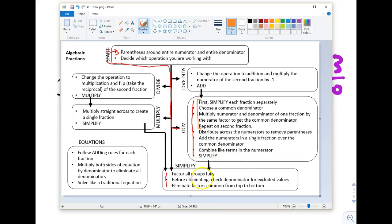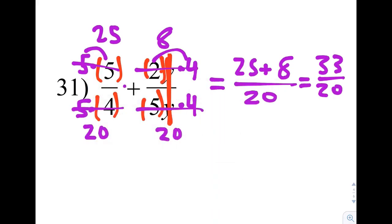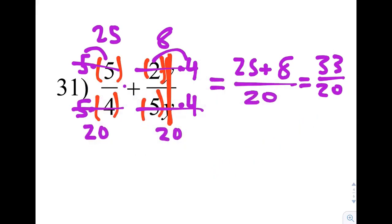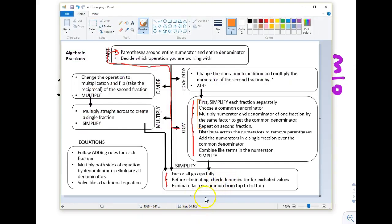So let's go back to our chart. It says combine like terms in the numerator, which we just did. Simplify. Factor all groups fully. Well, 33 and 20 do not share any common factors. 33 factors into 3 and 11. And 20 does not factor into either of those. So there's nothing that's going to be a common factor. Check for excluded values. Since there's no letters, variables in this problem, it actually wouldn't have any. Nothing left to eliminate.